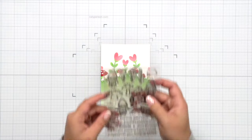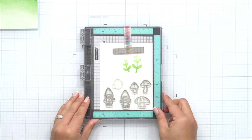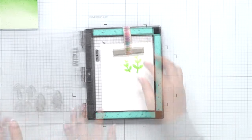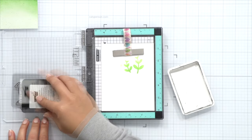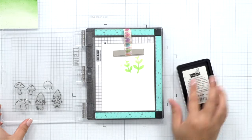So now that our background is complete, I'm going to stamp some little gnomes for our scene. This is from the Oh Gnome set. So I'm going to stamp a female and male gnome as well as some mushrooms in this little speech bubble.